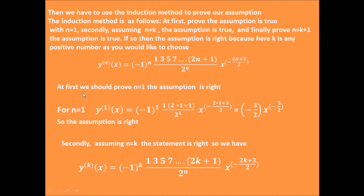First, we prove that when n equals 1, the assumption is right. For n equals 1, which is the first derivative, we replace n with 1 in the assumption formula. We get the first derivative equals minus 3 divided by 2 times x to the minus 5 divided by 2, which is the same result we obtained previously. So this assumption is right for the first derivative.